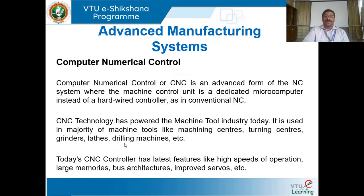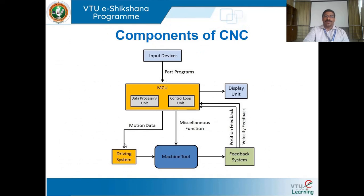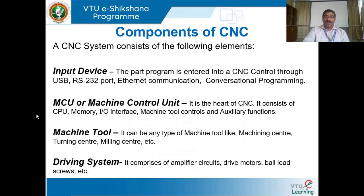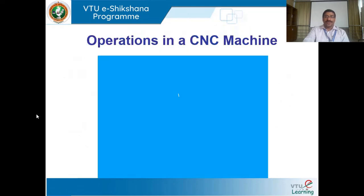The CNC controller features very high operation speed, positional tolerances can be achieved, deviations at the tool-work interface can be detected and corrected, and it has large memory with RAM, ROM, bus architectures, and improved servo motors and stepper motors. In the next class, we will discuss the components of CNC machines, part programming, and operations carried out on a CNC machine.